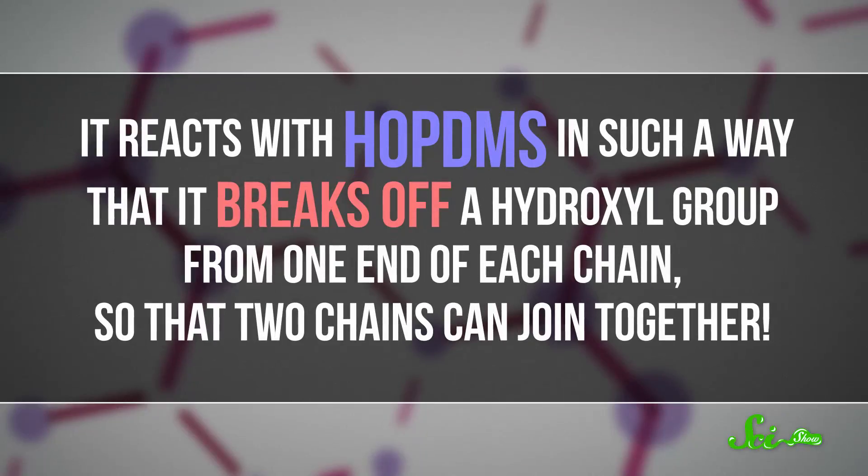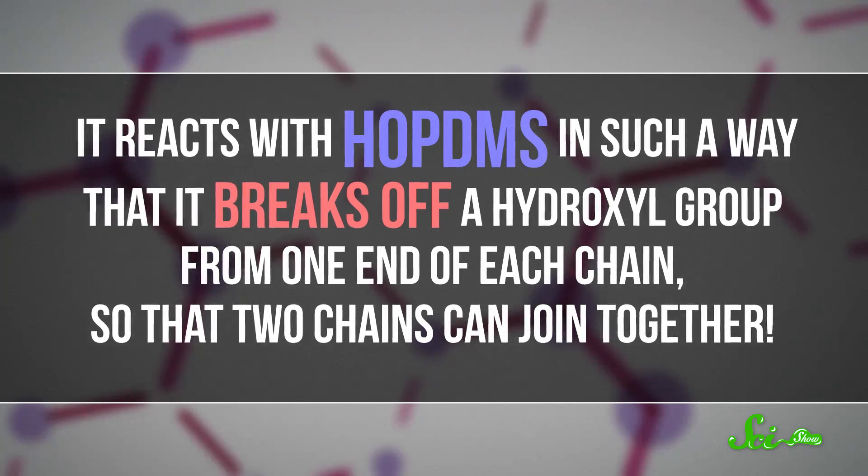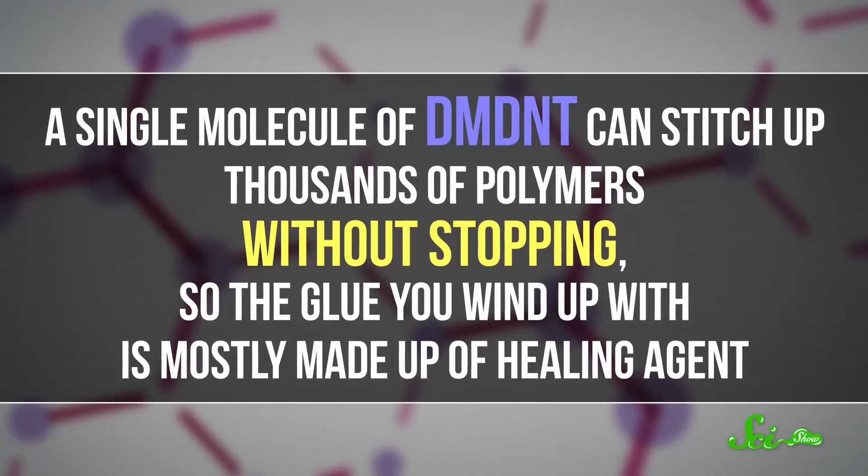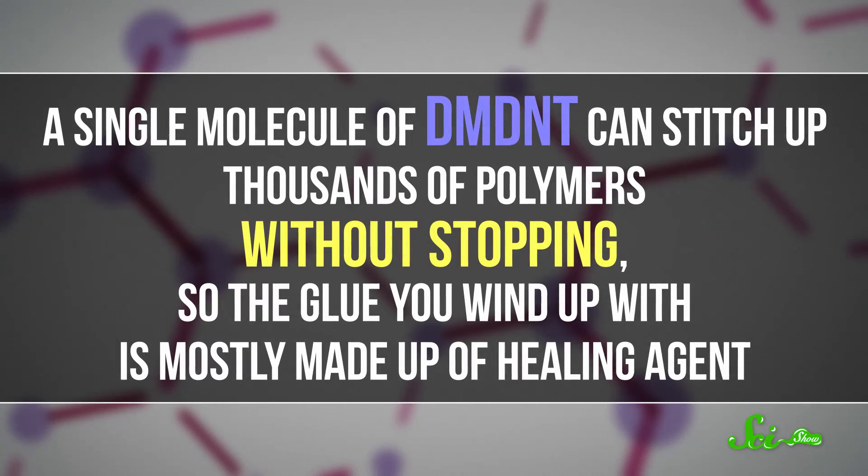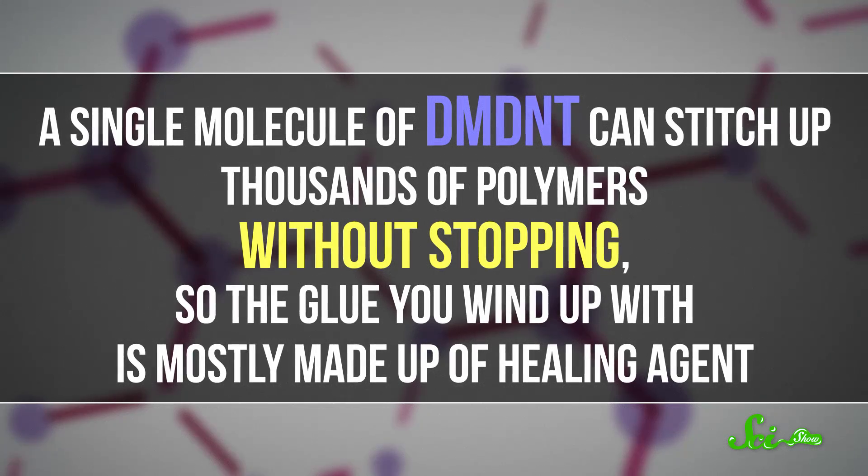When the plastic breaks, the chemicals leak out of their packets, and they mix. That's when the curing agent sets into action. It reacts with HOPDMS in such a way that it breaks off a hydroxyl group from one end of each chain, so the two chains can join together. A single molecule of DMDNT can stitch up thousands of polymers without stopping, so the glue you wind up with is mostly made up of healing agent.